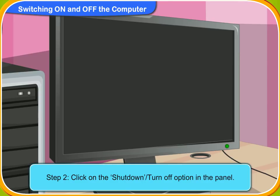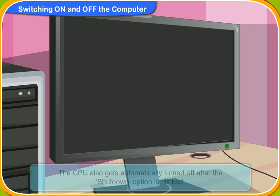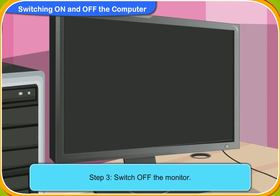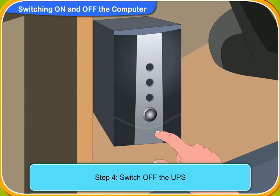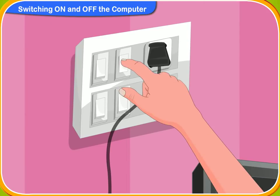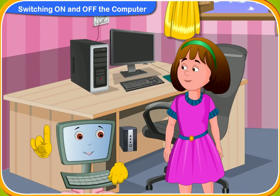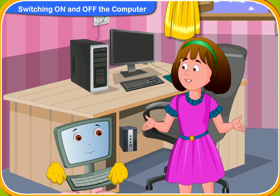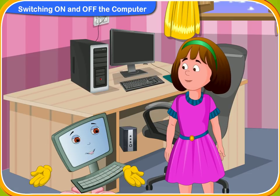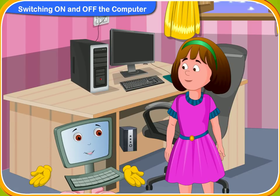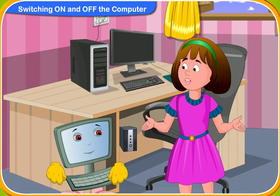Look, the screen has now turned black. It means the computer is now turned off. The CPU also gets automatically turned off, so we are not required to turn off the CPU. Now, switch off the monitor and after that switch off the UPS. I hope you know how to switch on and off a computer. Yes, I do now. So always remember these steps while turning on or off a computer. Definitely, Clicko.